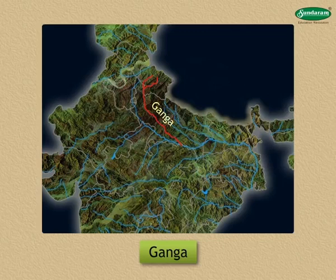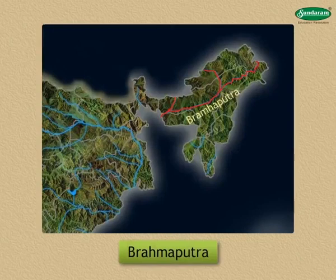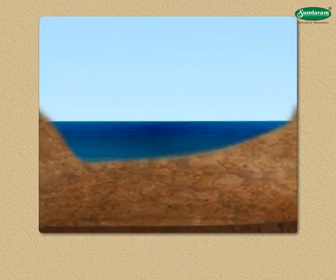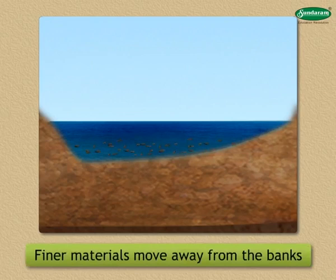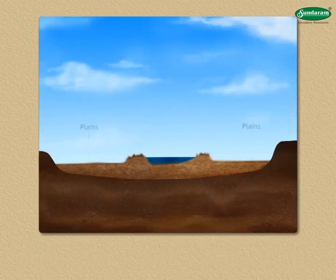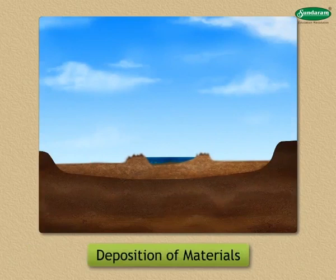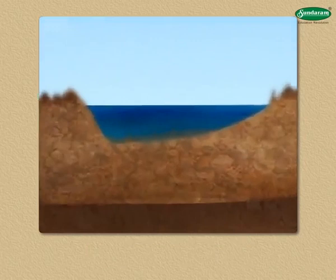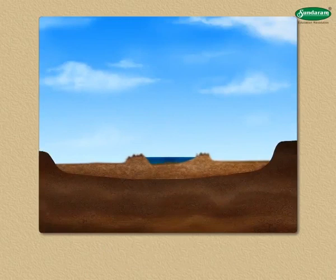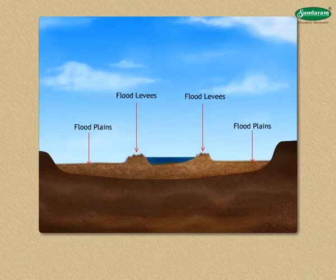Flood levees and flood plains: Deposition along the banks of a river leads to the formation of flood plains and flood levees. During floods, finer materials are moved away from the banks whereas the coarser material gets settled at the bank itself. On either side of the river, plains are formed due to the deposition of materials. Such plains are called flood plains. The elevation along the bank increases due to deposition of coarser material, giving rise to hillock-like forms parallel to the river banks called flood levees. Such flood plains and levees are seen in the flood-prone areas of river Ganga.